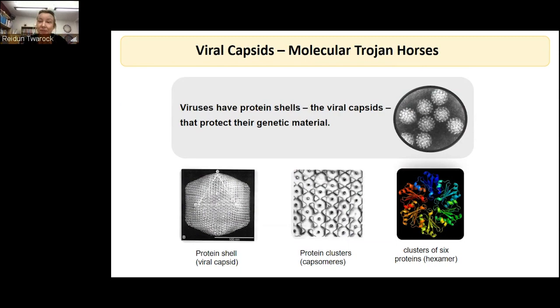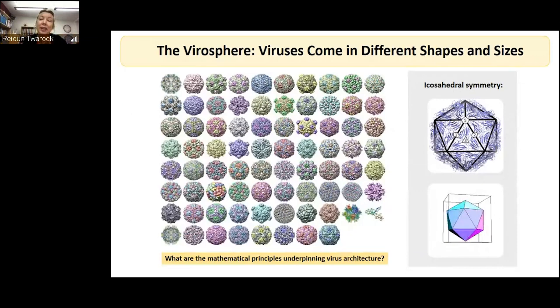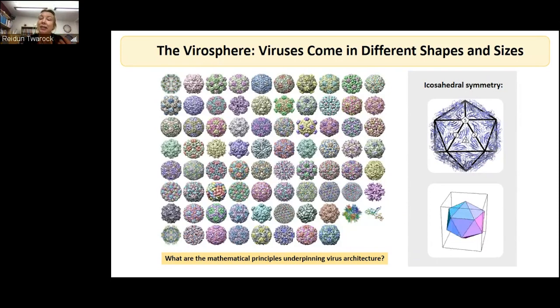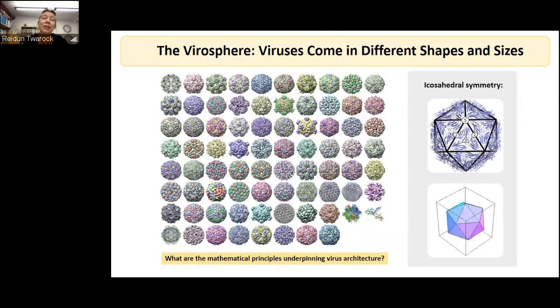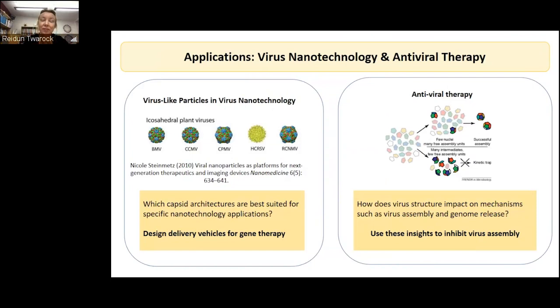From a mathematical point of view, what we're interested in is to predict and understand the construction principles underlying the placement of these protein units and clusters. Here you see an image of different viruses that all share one feature: icosahedral symmetry. You see on the right-hand side the characteristics of icosahedral symmetry — five-, two-, and three-fold symmetry axes at the vertices, edges, and centers of triangles of an icosahedron. Even though they all share that symmetry, they are very distinct on the outside.